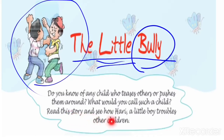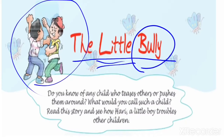Read the story and see how Harry, a little boy, troubles other children. Harry is the main character in the story. Harry is like a small bully who frightens others — children are frightened because of him and he fights with others very much. We have to learn that we will not do such things as Harry does in this lesson, but become like the other good children and see how they deal with Harry.